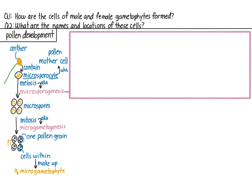Microsporogenesis starts with the diploid microsporocyte. Shown here is an actual microsporocyte, and here is one as a drawing. The microsporocyte has a diploid nucleus — a nucleus with two sets of chromosomes. The chromosomes are visualized here by staining with DAPI, a compound that binds to chromosomes and glows when hit with a certain wavelength of light. It's an easy way to see where the chromosomes are and, therefore, where the nucleus is within a cell.